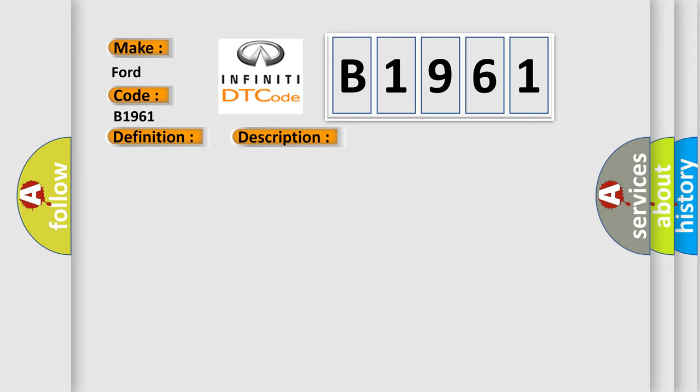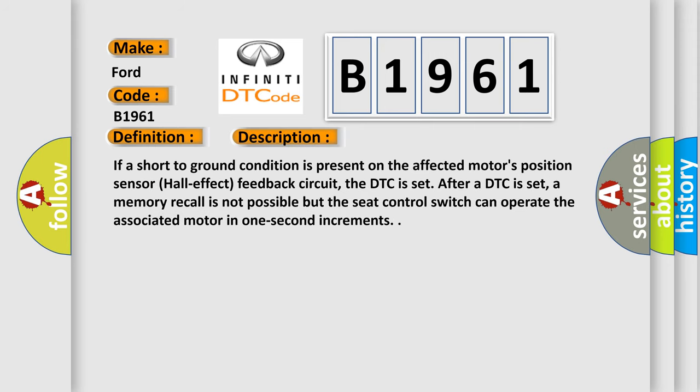The basic definition is: Seat reclined forward or backward position feedback circuit short to ground. If a short-to-ground condition is present on the affected motor's position sensor hall effect feedback circuit, the DTC is set. After a DTC is set, a memory recall is not possible, but the seat control switch can operate the associated motor in one-second increments.